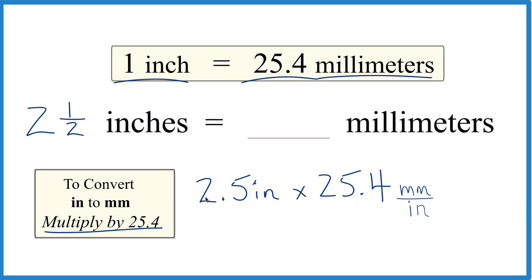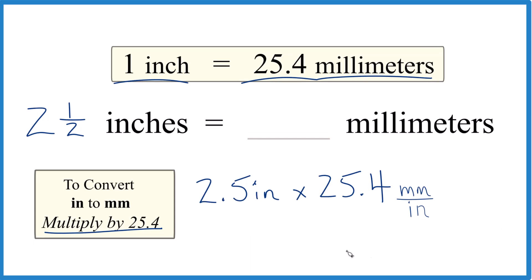So now we multiply 2.5 times 25.4, we end up with 63.5. And because we have inches here on the top and inches on the bottom, we can cross those out, we're left with millimeters.